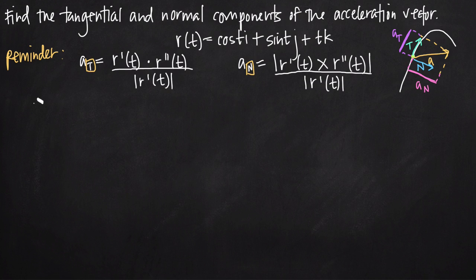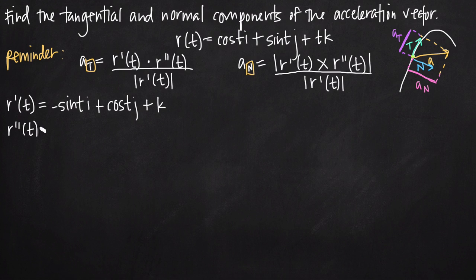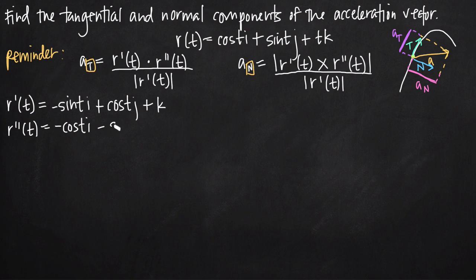The first thing we need to do is compute the derivative of our position function. r prime of t: the derivative of cosine of t is negative sine of t, giving us negative sine t times i; the derivative of sine of t is cosine of t, giving us plus cosine t times j; and the derivative of t is 1, giving us plus k. For r double prime of t, the derivative of negative sine t is negative cosine t times i; the derivative of cosine t is negative sine t times j; and the derivative of 1 is 0, so the k term drops out.